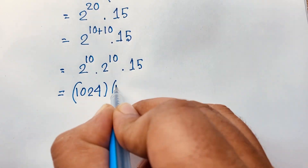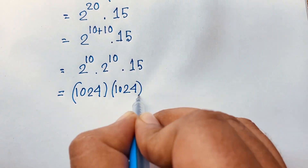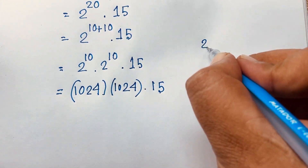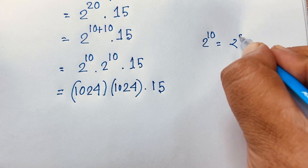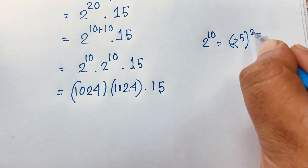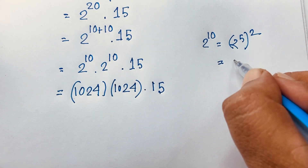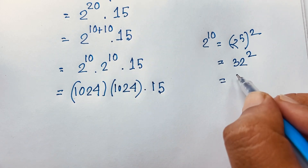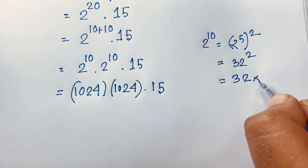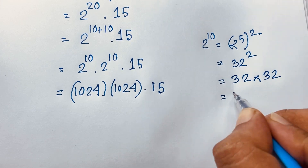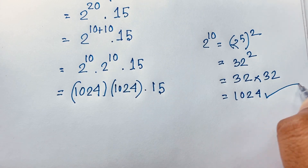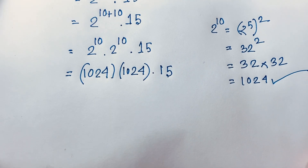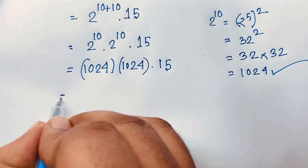We know 2 to the power 10 equals 1024. We can verify this: 2 to the power 10 equals (2 to the power 5) to the power 2, and 2 to the power 5 equals 32, so 32 times 32 equals 1024. So the expression is now 1024 times 1024 times 15.